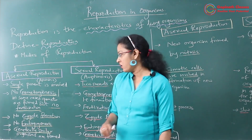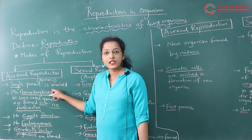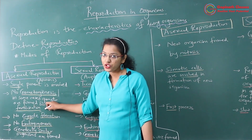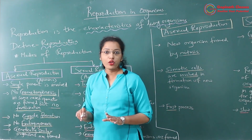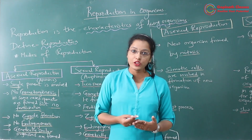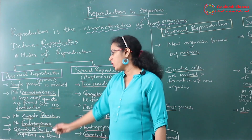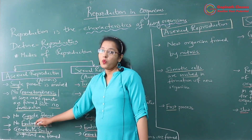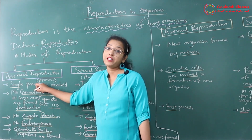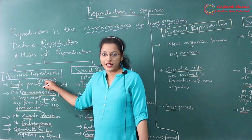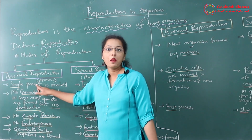So there is no fertilization in asexual reproduction. Since the gamete is not formed, the question of fertilization does not arise. There is no zygote formation, and since zygote is not formed, there is no embryogenesis. Whatever new offspring is formed comes from the single parent, so it will be genetically similar to the parent organism.